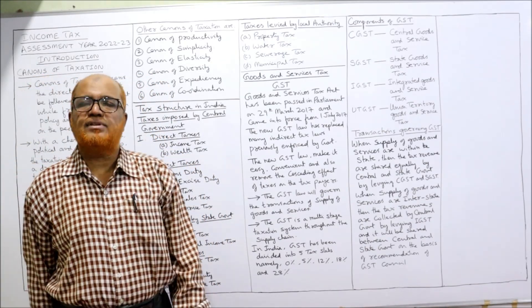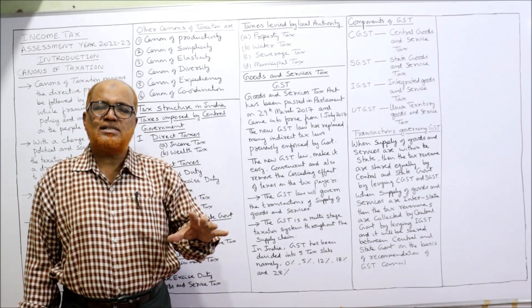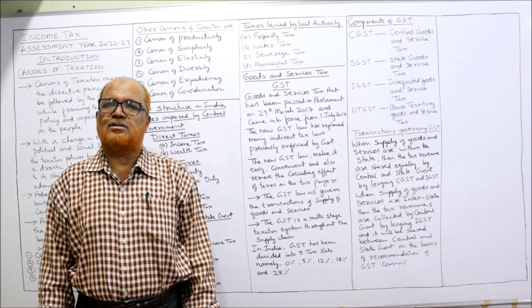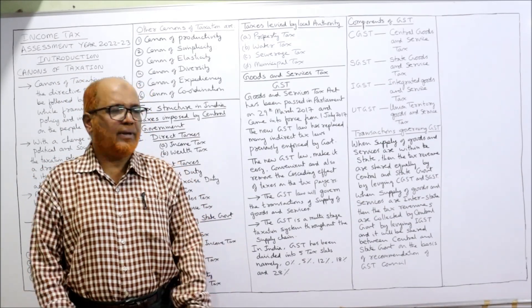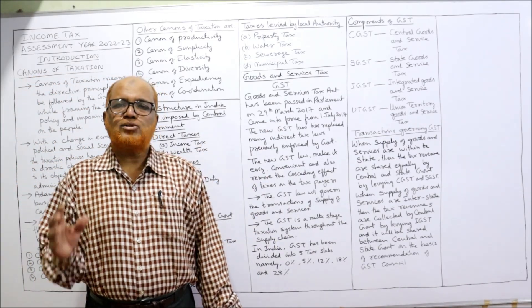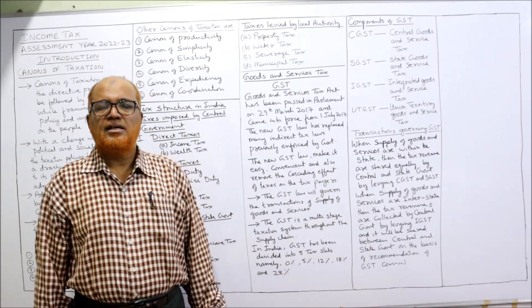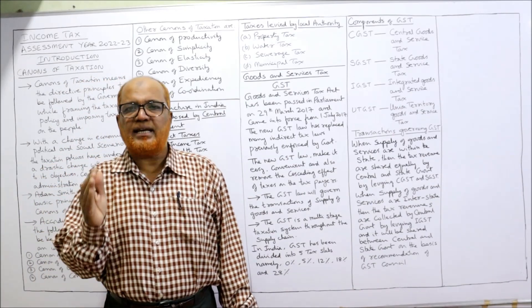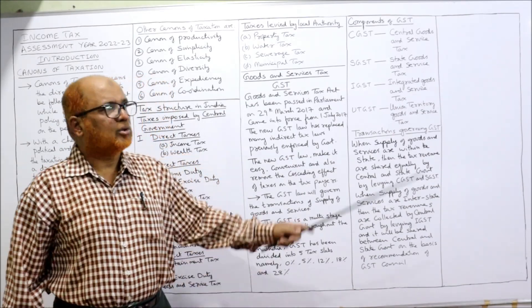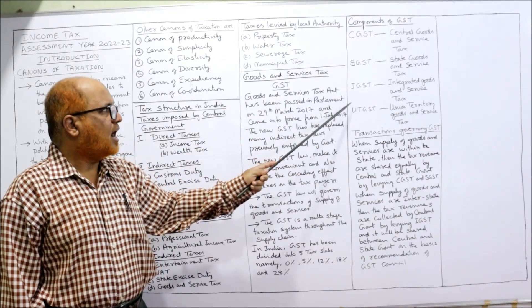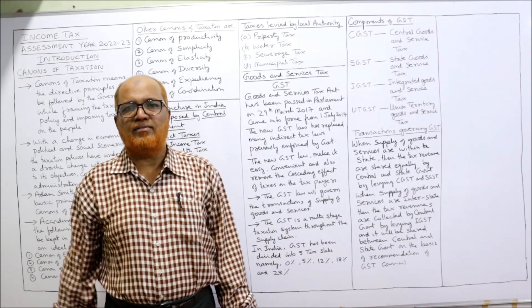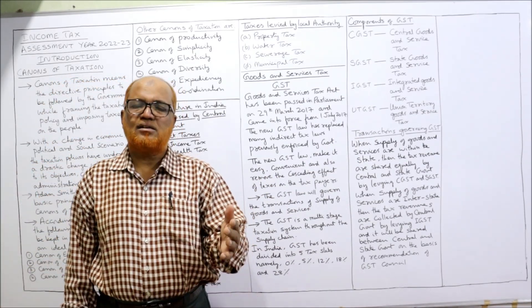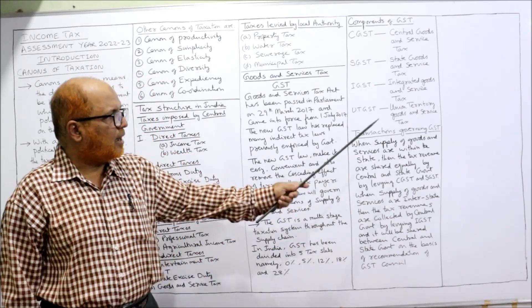In India, GST has been divided into five slabs. The five slab rates are 0%, 5%, 12%, 18%, and 28%; different rates apply to different items. Regarding components of GST, students must know the different types: CGST — Central Goods and Services Tax; SGST — State Goods and Services Tax; IGST — Integrated Goods and Services Tax (integrated meaning combined); and UTGST — Union Territory Goods and Services Tax, applicable to India's union territories.